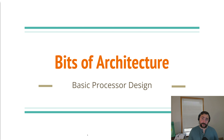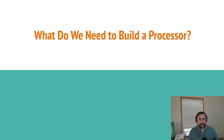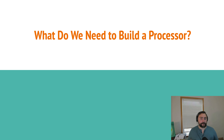Hey everyone, I'm Nick and this is Bits of Architecture. In this episode of the series, we're going to be talking about basic processor design — specifically the major components needed for a processor for a subset of the RISC-V instruction set. We're not talking about low-level implementation details like HDL or Verilog; we're going to start with the high-level organization: what components do we need, how do they fit together, how are they connected and controlled?